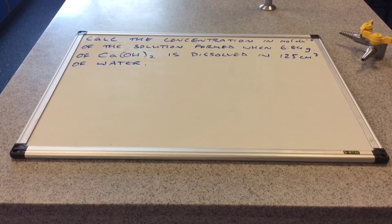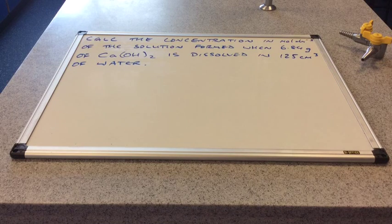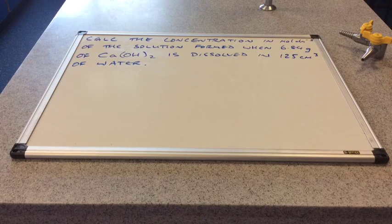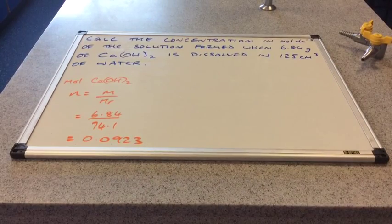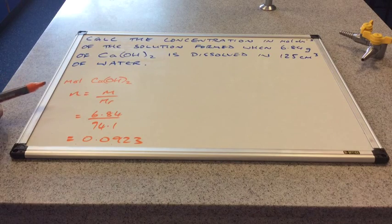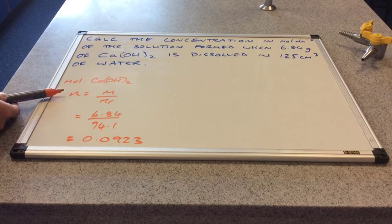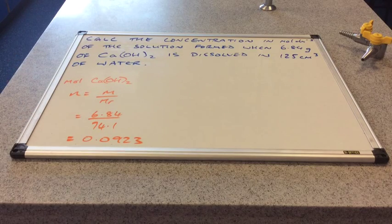Now have a go at this question: calculate the concentration in moles per dm³ of the solution formed when 6.84 grams of calcium hydroxide is dissolved in 125 cm³ of water. Pause and have a go. The first thing to do is work out how many moles of calcium hydroxide we have using the mass triangle: moles n equals mass over MR, so 6.84 divided by 74.1, which gives 0.0923 moles to three significant figures.